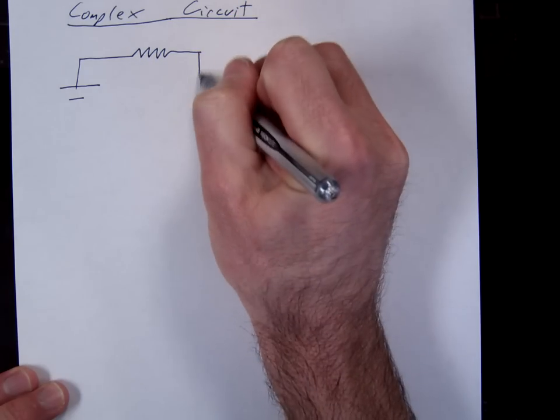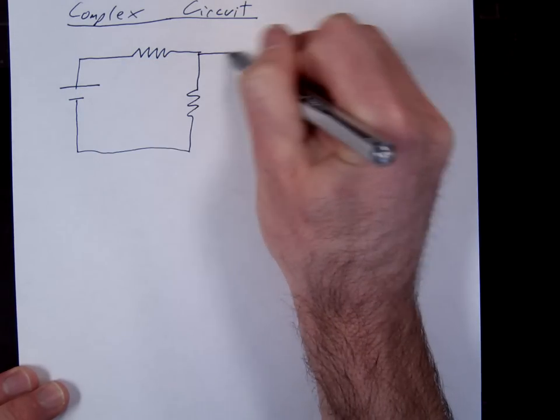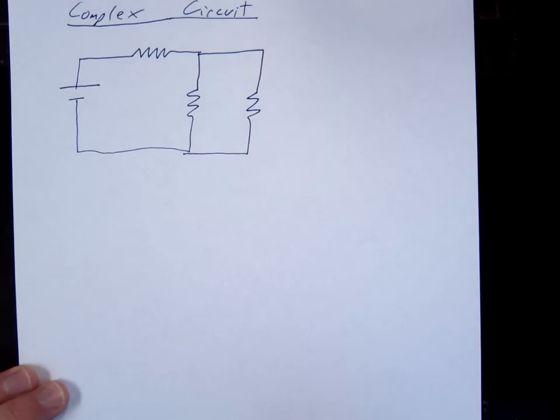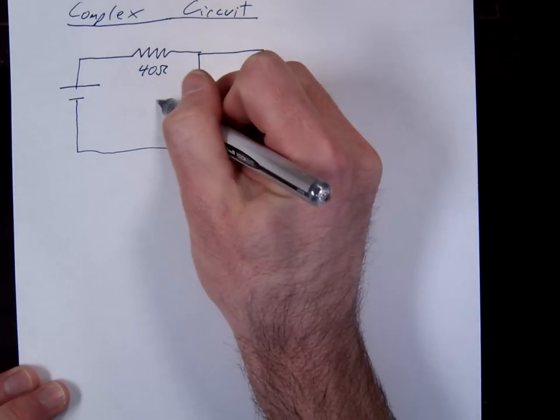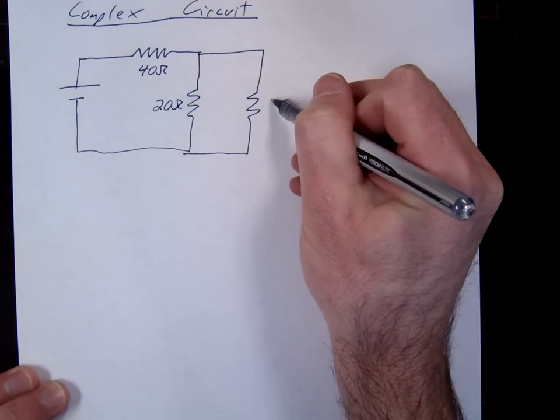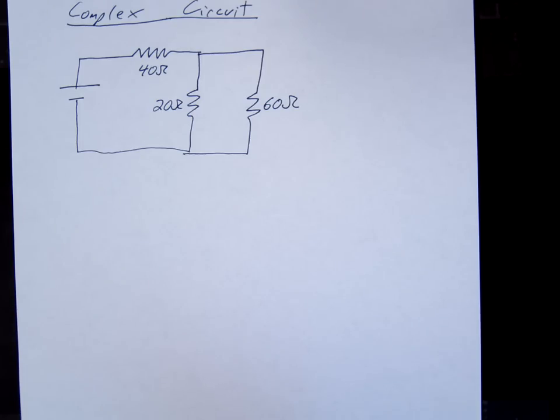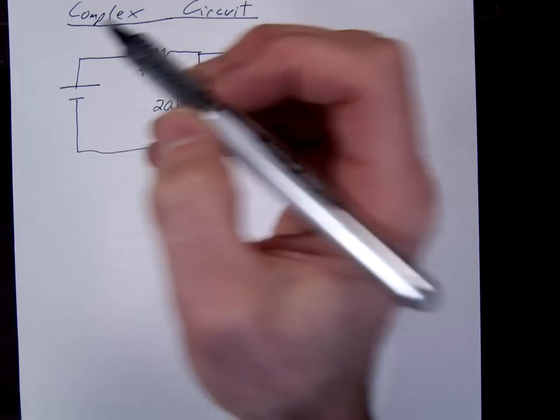One resistor here, one resistor here, and one more resistor here. So here's the circuit that I want to try to solve. Let me give you some numbers here. Let's say this is 40 ohms, 20 ohms, 60 ohms, and this is 70.